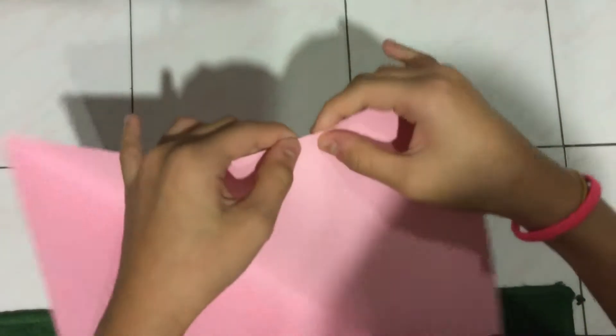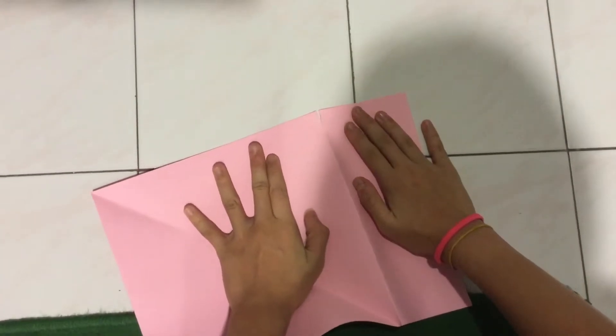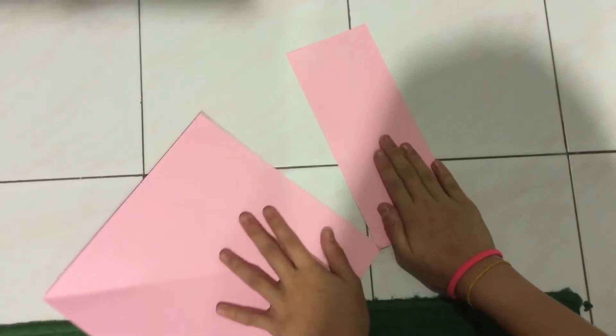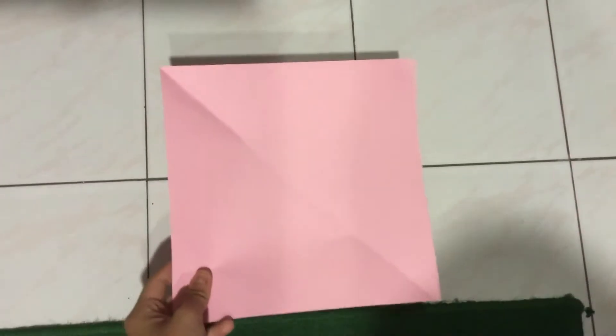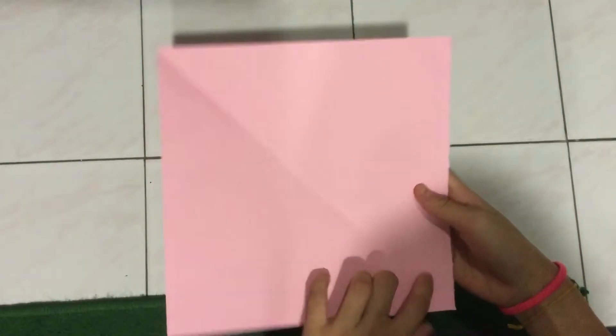Anyway, so then you just tear on this line. Make sure you're careful. So then you end up with a square with a line going this way.